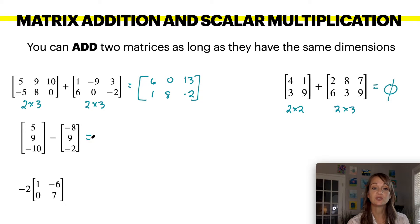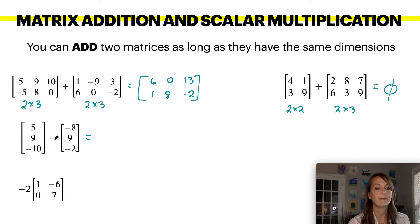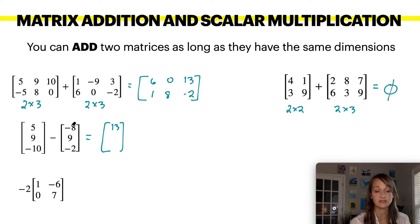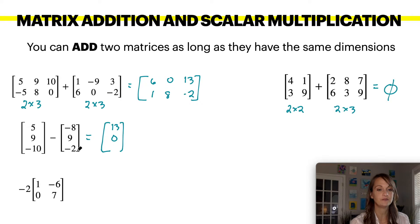You are also allowed to subtract matrices. You would subtract each entry that corresponds to the other entry. So five minus a negative eight actually turns to a positive thirteen because minus and negative cancel leaving you a positive. Nine minus nine is zero. Negative ten minus a negative two should give you a negative eight.